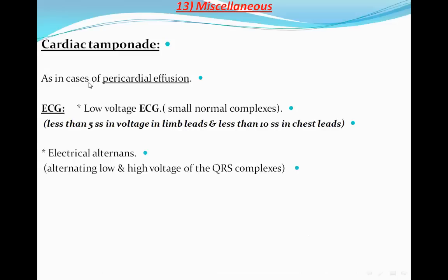As in cases of pericardial effusion, the ECG will be low voltage — small normal complexes, less than 5 small squares in voltage in limb leads and less than 10 small squares in chest leads. To name the ECG as low voltage, it should be less than 5 small squares or 1 big square in the limb leads, and less than 2 big squares in the chest leads. Electrical alternans is defined as alternating low and high voltage of the QRS complex.